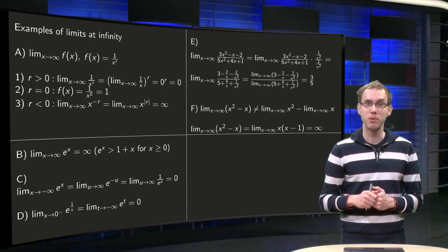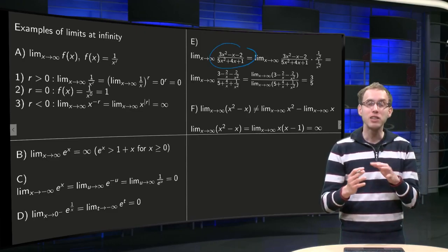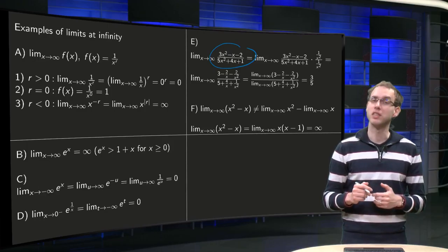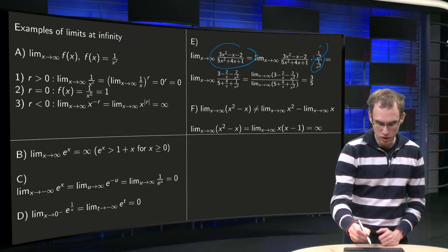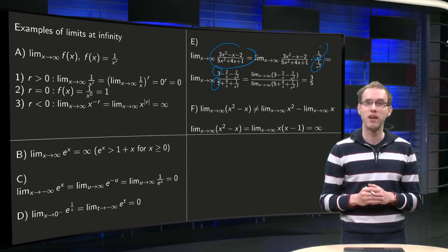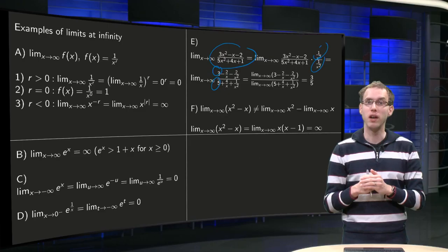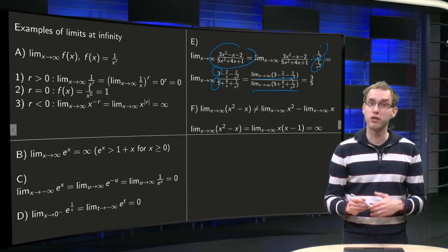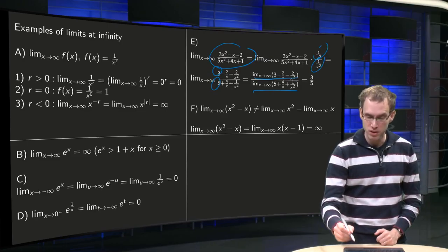Now let's look at a limit that looks really nasty: a quotient with all kinds of x's everywhere. Actually this type of limit is not so difficult. What we do is divide numerator and denominator by the highest power available, which in this case is x squared. So the 3x squared becomes 3, the 5x squared becomes 5, and all other terms become factors like 2 over x and 2 over x squared, etc. Then we apply the quotient rule — the limit of the quotient equals the quotient of the two limits — and then the sum rule, since limit of 2 over x equals 0. What we are left with is just 3 and 5, so the limit equals 3 over 5.